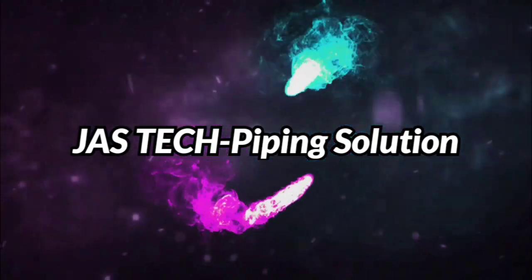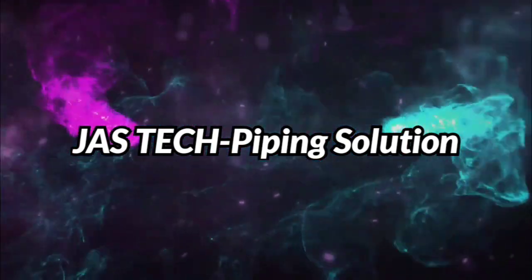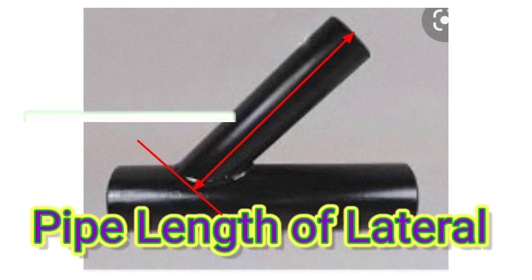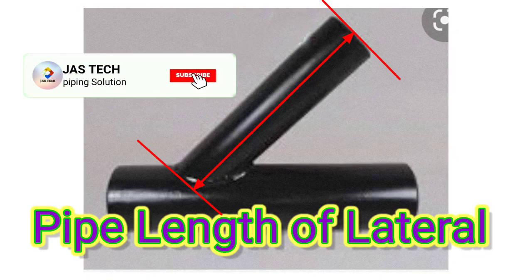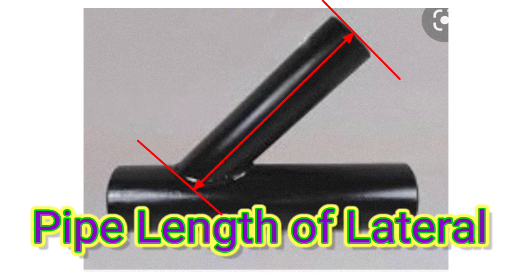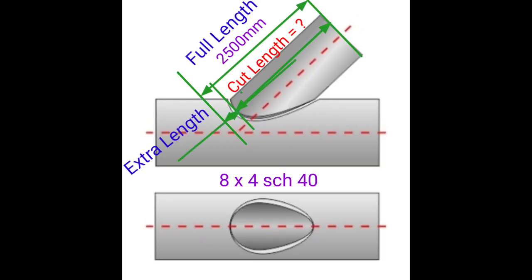Welcome to Jaws Tech Piping Solution. Today our topic is pipe length of lateral T. As per drawing, full length of pipe is 2500mm. We need the cut pipe length of lateral. We take a sample: 8 inch header, 4 inch riser or branch, schedule 40.